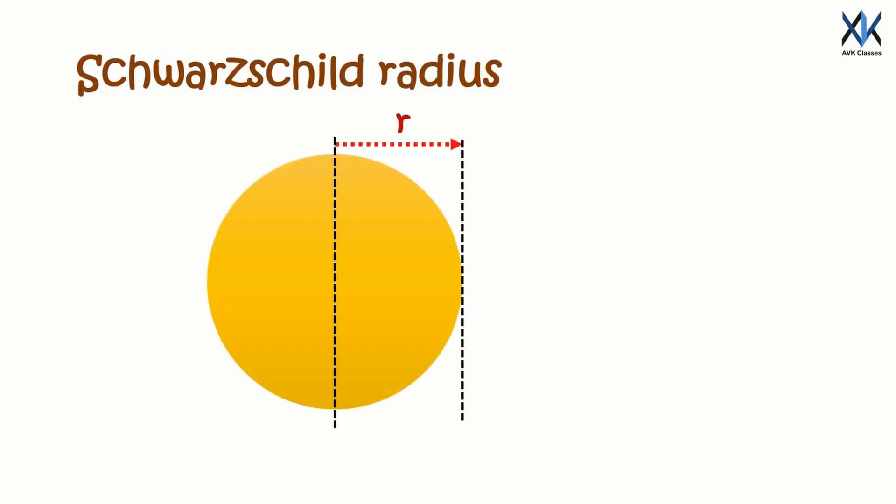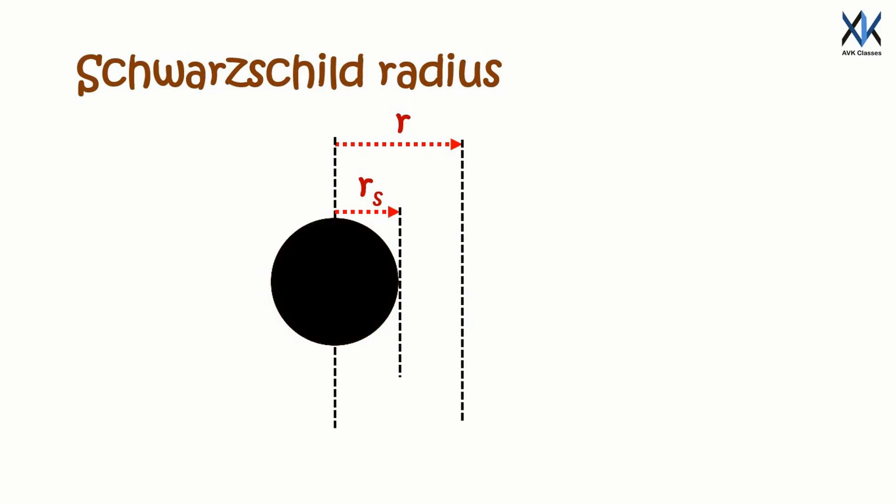The Schwarzschild radius, sometimes historically referred to as the gravitational radius, is the radius of a sphere such that if all the mass of an object were to be compressed within that sphere, the escape velocity from the surface of the sphere would equal the speed of light. That means it becomes a black hole.